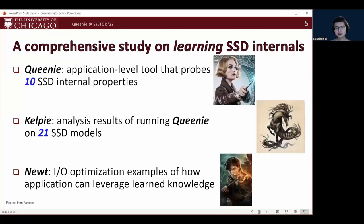As an interesting note, the naming of our paper is adopted from the movie series Fantastic Beasts and Where to Find Them, which portrays a wizarding world. QINI is a character who can read other people's minds. QALPI is a shape-shifting creature that can take any form, representing many forms of the SSD internals. And Newt is the main character of the series. Newt is a scholar who studies those fantastic beasts and helps solve crimes in the wizarding world.